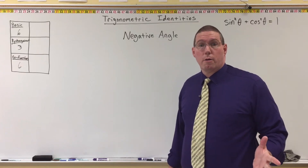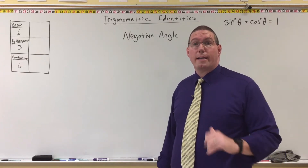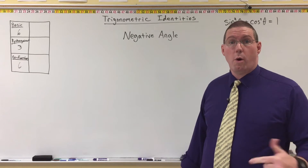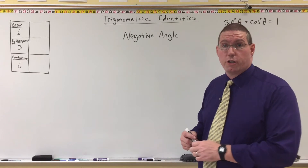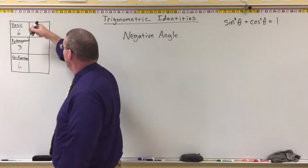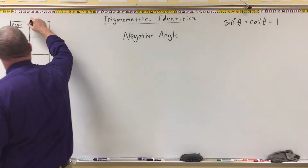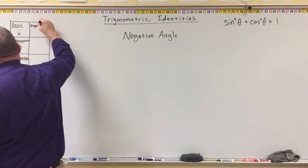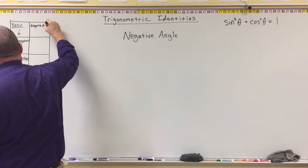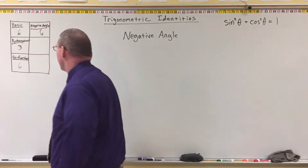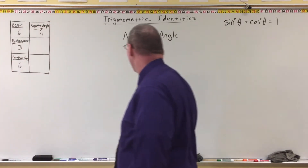All right, so now we're going to learn the negative angle identities. There are six of them, one for each trigonometric function. We're going to call these the negative angle identities.